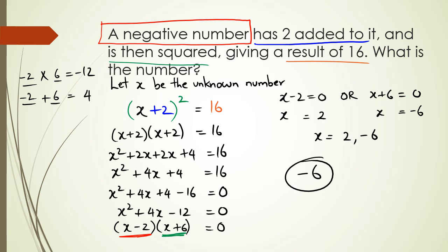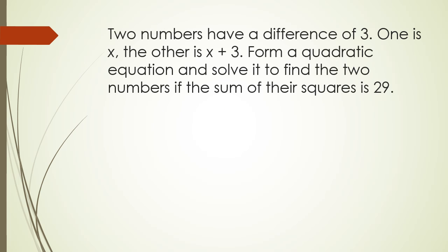Let's look at another similar word problem. In this question, two numbers have a difference of three — one is x, the other is x plus three. Form a quadratic equation and solve it to find the two numbers if the sum of their squares is 29. So we have x and x + 3, and the sum of their squares equals 29.